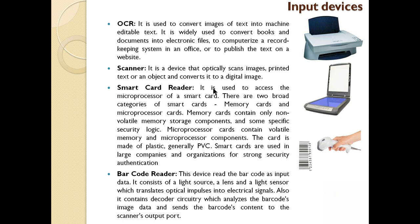Next is OCR — Optical Character Reader. It's a device used to read characters. It will read the characters written on any page. It converts images of text into machine-editable text. It is widely used to convert books and documents into electronic files. If a fully printed page is put into it, the result on screen will be the typed, digital, and editable form of that page. That is OCR.